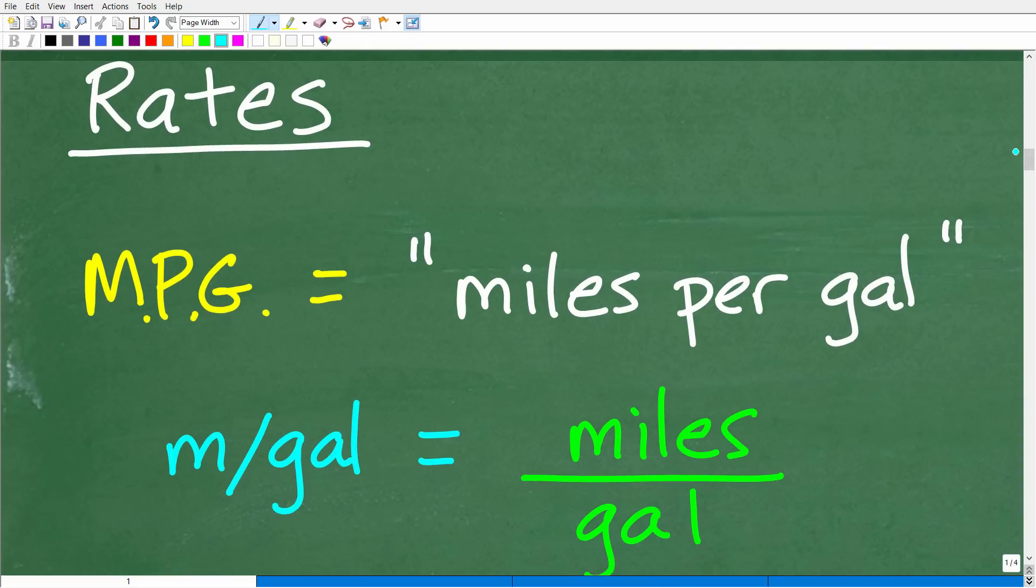Okay, so in mathematics, okay, anytime, well, math and science, anytime you hear the word per, okay, like miles per hour, this is a good example. Miles per hour, miles per gallon, miles per hour, meters per second. And there's a ton of these type of measurements, and this is what we call a rate, okay? And the way you can recognize rates is with this word per.